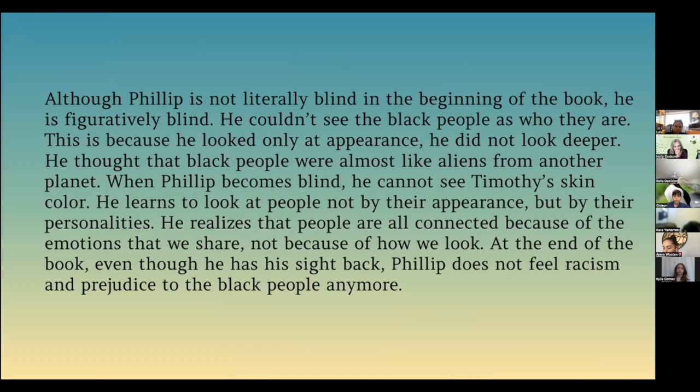And at the end, although Philip is not literally blind in the beginning of the book, he is figuratively blind. He couldn't see the black people as who they are, because he looked only at appearance and did not look deeper. He thought that black people were almost like aliens from another planet. When Philip becomes blind, he cannot see Timothy's skin color. He learns to look at people not by their appearance, but their personalities. He realizes that people are all connected because of the emotions that we share, not because of how we look. At the end of the book, even though he has his sight back, Philip does not feel racism and prejudice toward black people anymore.